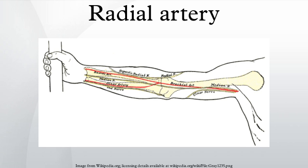The palmar carpal branch of the radial artery is a small vessel which arises near the lower border of the pronator quadratus. The superficial palmar branch of the radial artery arises from the radial artery just where this vessel is about to wind around the lateral side of the wrist.